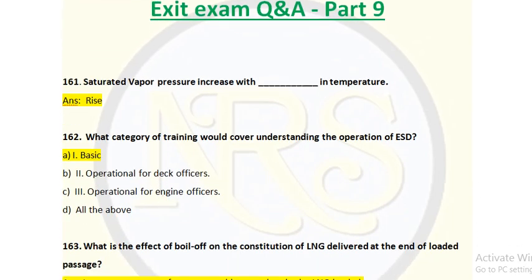Question number 162: What category of training would cover understanding the operation of ESD (emergency shutdown)? Option A: Basic. Option B: Operational for deck officers. Option C: Operations for engine officers. Option D: All of the above. The correct answer is Option A — Basic.